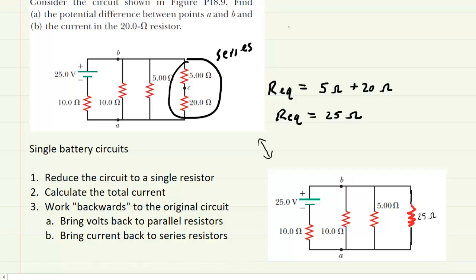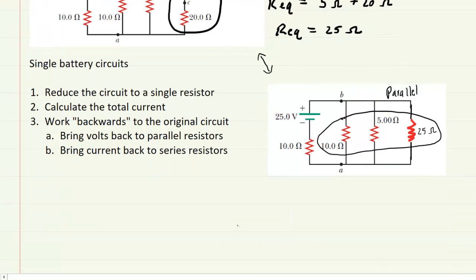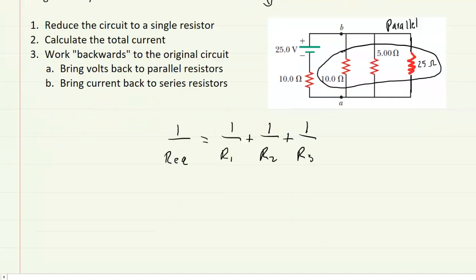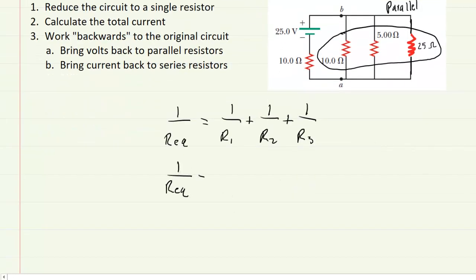Continuing the process of reducing this circuit to a single resistor, we next notice that three resistors are connected in parallel with one another. To determine the equivalent resistance of a parallel combination is a little trickier. We follow the equation where 1 over the equivalent resistance equals 1 over R1 plus 1 over R2, and so on. Plugging in our three resistance values, going left to right: 1 over 10 ohms, plus 1 over 5 ohms, plus 1 over 25 ohms.